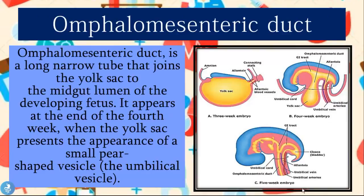Meckel's Diverticulum occurs because of an incomplete obliteration of the omphalomesenteric duct. This duct is a long narrow tube that joins the yolk sac to the midgut lumen of the developing fetus. It appears at the end of the fourth week when the yolk sac presents as a small pear-shaped vesicle called the umbilical vesicle. Normally this duct obliterates and separates as the small intestine develops further, but in Meckel's Diverticulum it fails to obliterate, causing that extra pouch or sac which is the diverticulum itself.